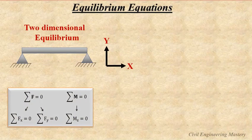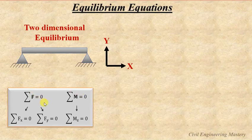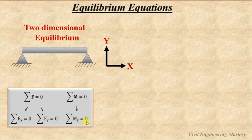Let's move on to the equilibrium equations. For a two-dimensional element with x and y directions, there are three possible equilibrium equations — two for force and one for moment: the sum of forces in the x direction equals 0, the sum of forces in the y direction equals 0, and the summation of moments equals 0.